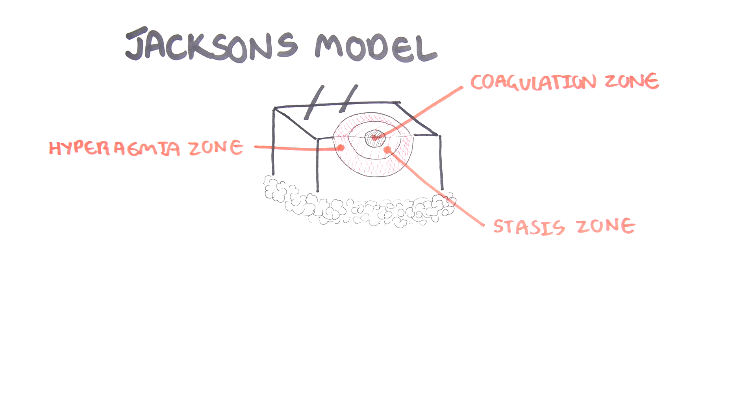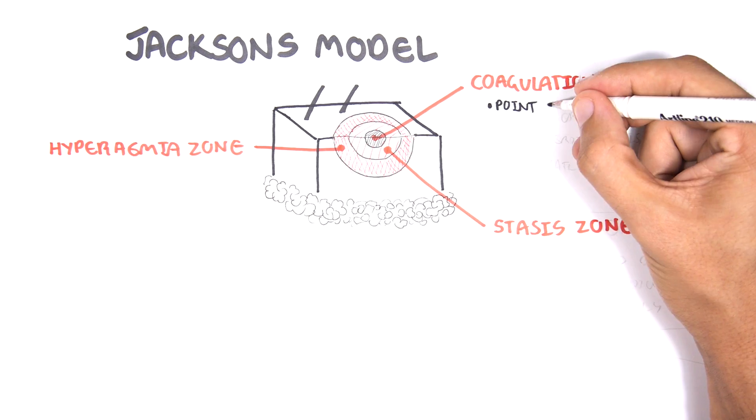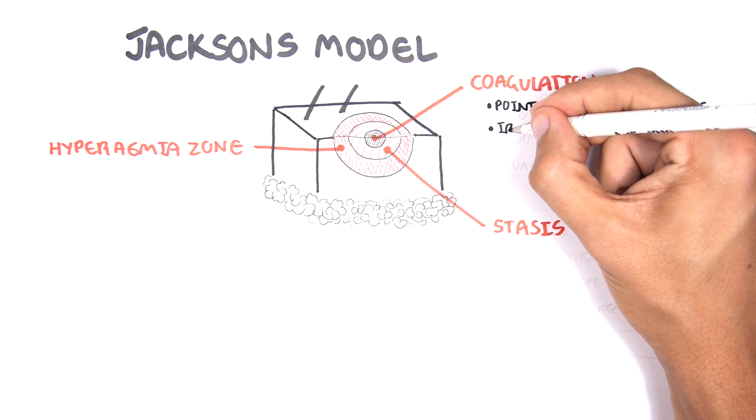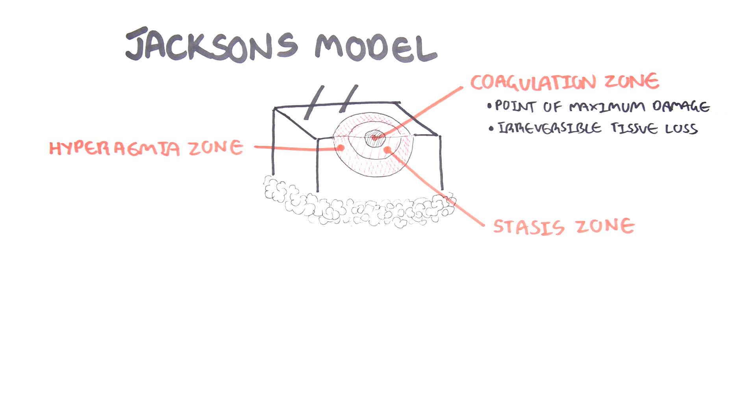The zone of coagulation is essentially the point of maximum damage. In this zone, there is irreversible tissue loss due to coagulation of proteins. Thus, you get coagulative necrosis.